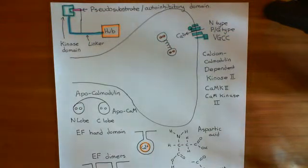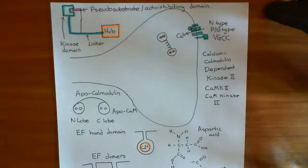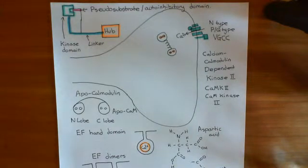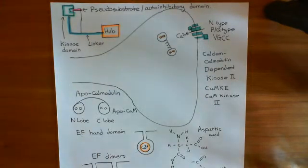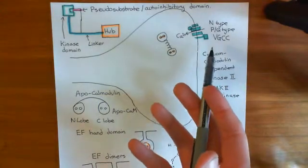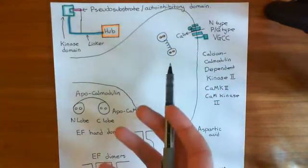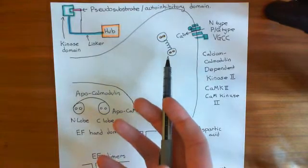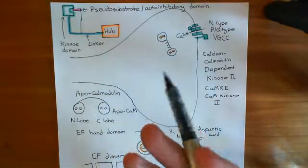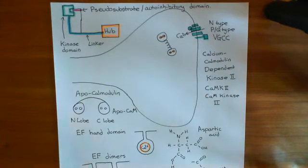Welcome to this next video in which we're discussing the release of neurotransmitter. We're at the stage of trying to understand how we're going to liberate synaptic vesicles which are attached to the actin cytoskeleton and are forming this reserve pool. So far we've let in the calcium through the N-type or PQ-type voltage-gated calcium channel, and it's bound to calmodulin to form calcium-calmodulin complexes. Now we want to see which enzyme calcium-calmodulin complexes are going to activate.